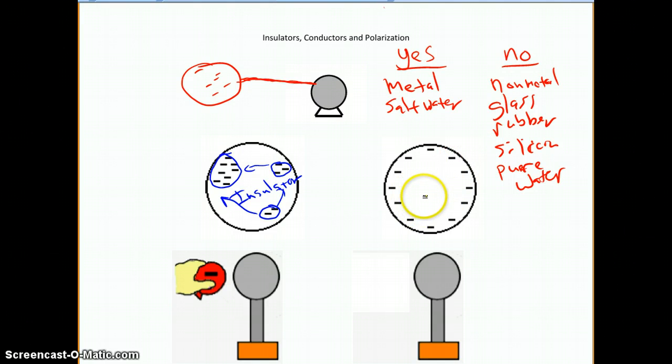Now the reason that happens is if you try to put all the little charges together in the middle here, they repel from each other. So they all try to get as far away from each other as they can. And the farthest they can get away from each other is for them all to go to the surface.